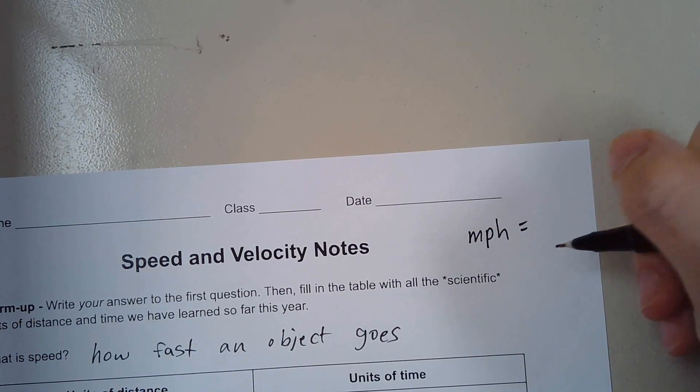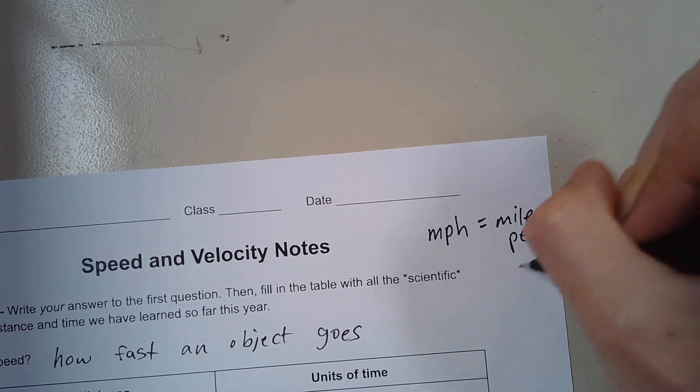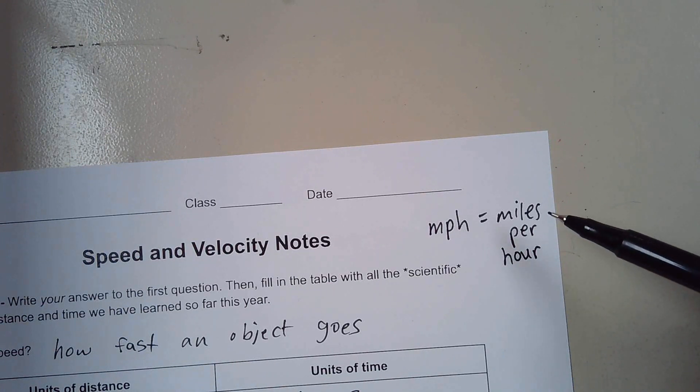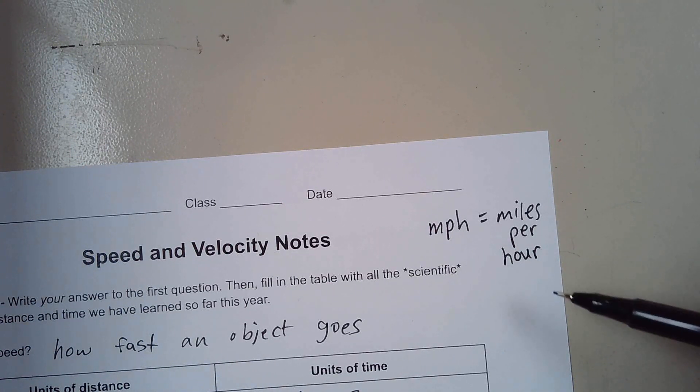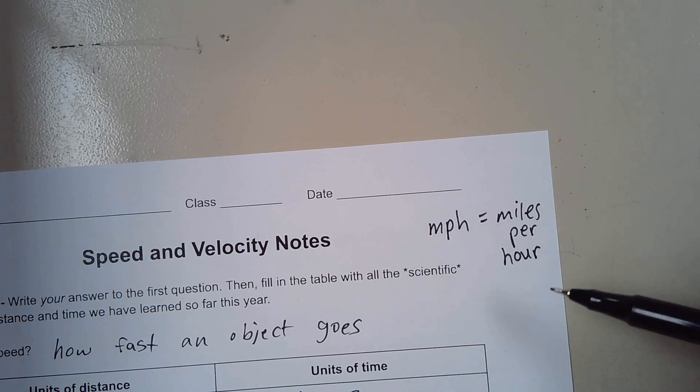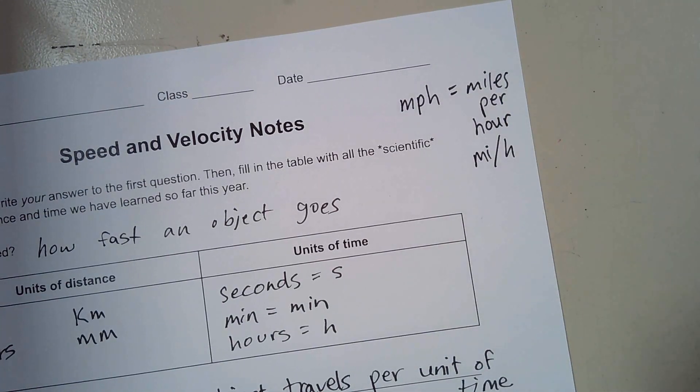You're familiar with MPH, which in our terms is miles per hour. If you look at this a little closely, miles is our unit of distance, and hour is a unit of time. So this is how you would read this. Miles per hour, or you could do MI for miles per H, which is hour.